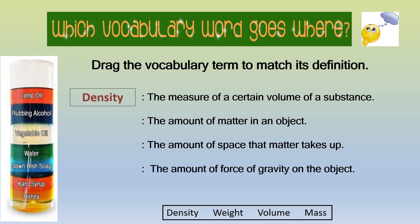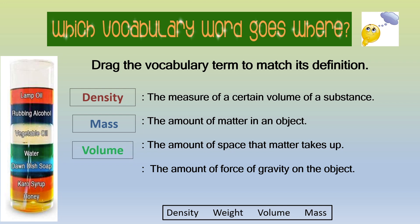Yes — density. The measure of a certain volume of a substance. Yes — mass. The amount of matter in an object. Very good. Volume: the amount of space that matter takes up. And weight: the amount of force of gravity on the object. Give your neighbor a high five for me.